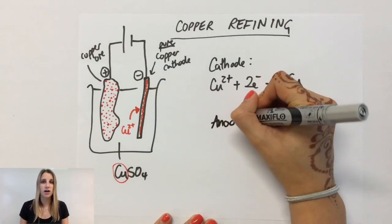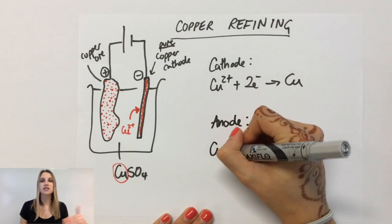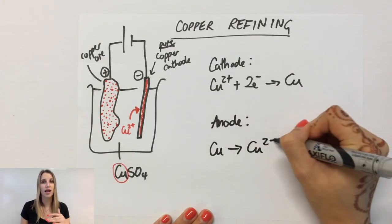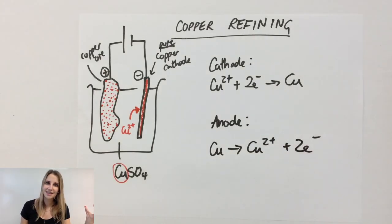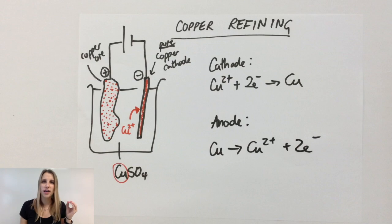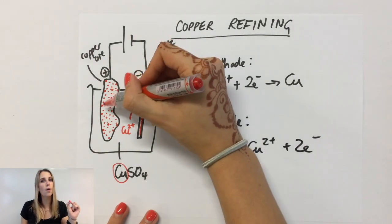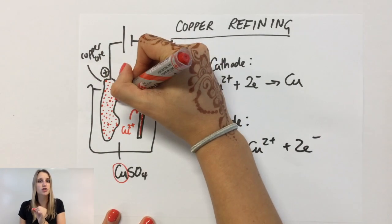At the anode, however, you've got the copper turning into Cu2+ and two electrons. But because in this case it's a piece of rock, it's just those pieces of copper that will be oxidized to Cu2+.